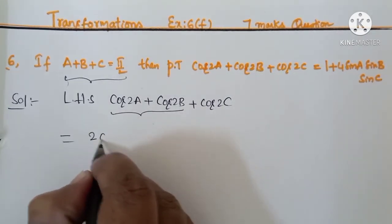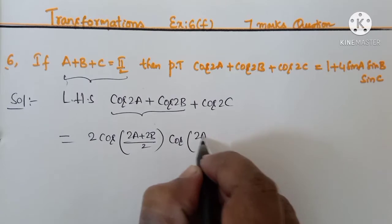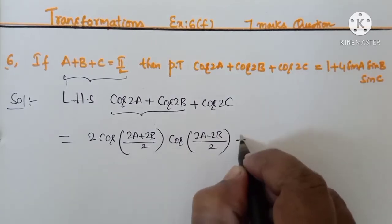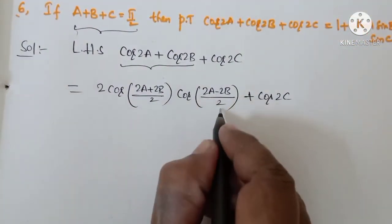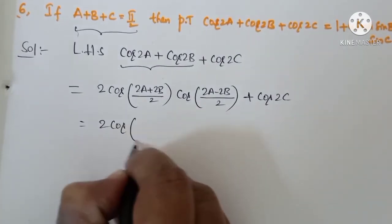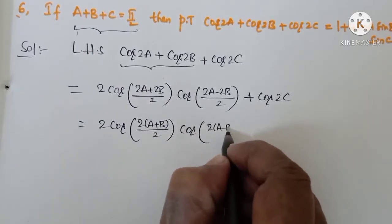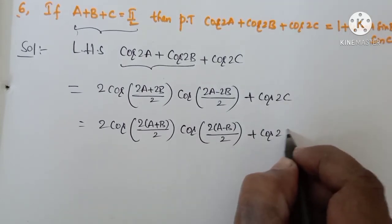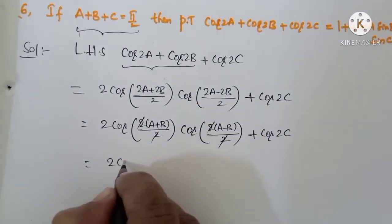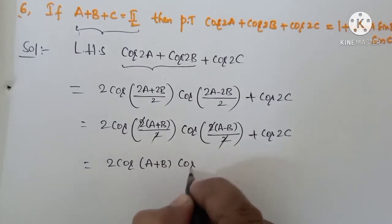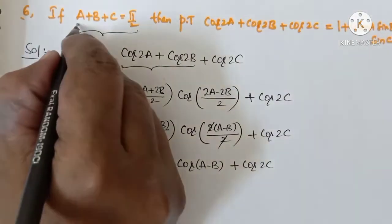Cos 2A plus Cos 2B is equal to 2 Cos((2A plus 2B)/2) Cos((2A minus 2B)/2), plus Cos 2C. Cancelling the 2s, this gives 2 Cos(A plus B) Cos(A minus B) plus Cos 2C.